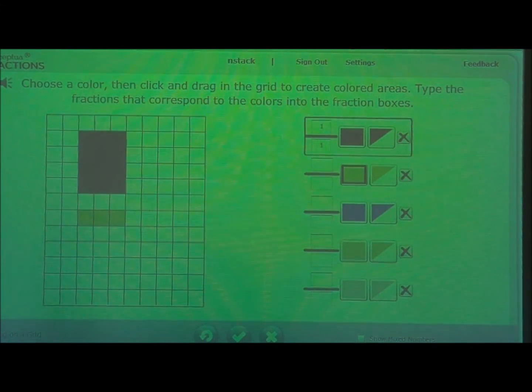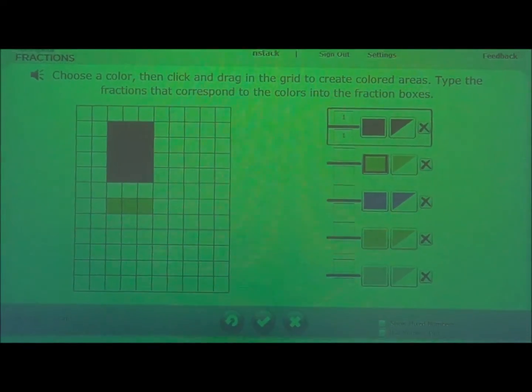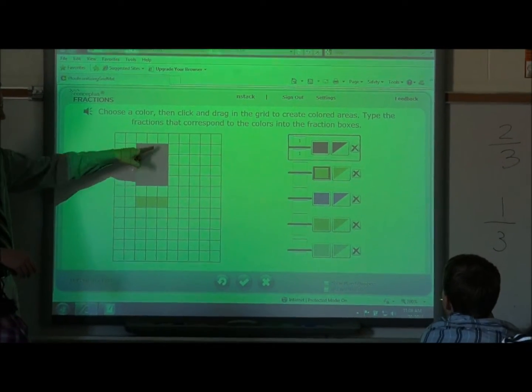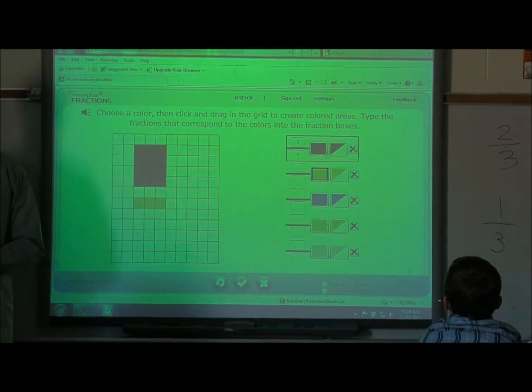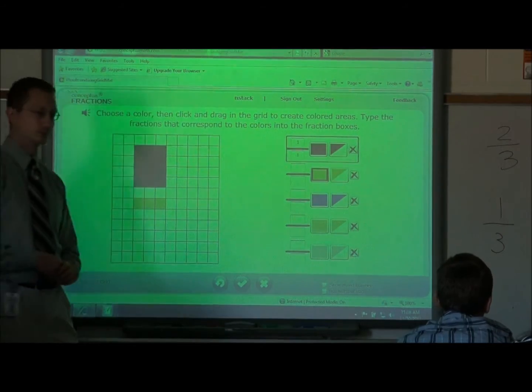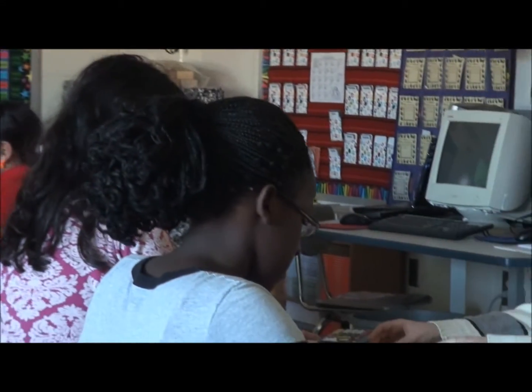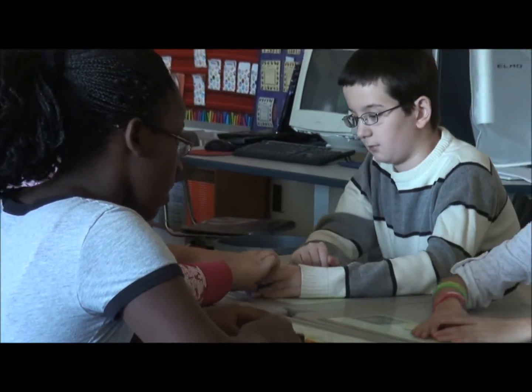So visually we're going to look at this. At your desk I've given you cubes. What I'd like you to do is go ahead and create this 3x4 rectangle at your desk with your cubes. So you're working in pairs, creating that 3x4 rectangle.